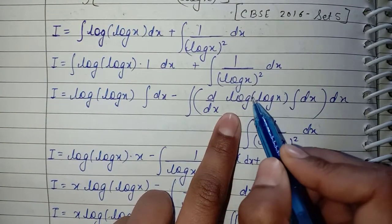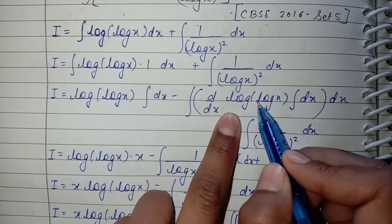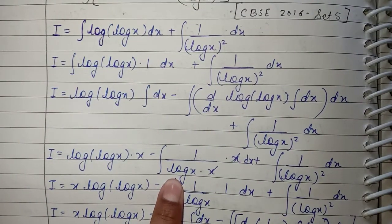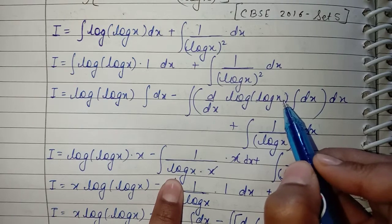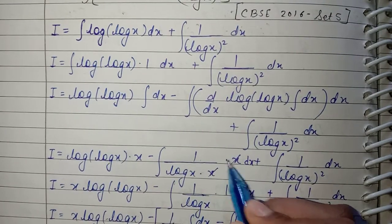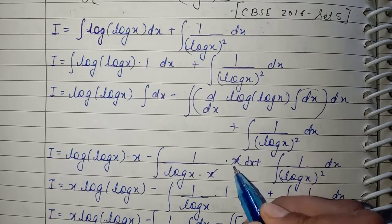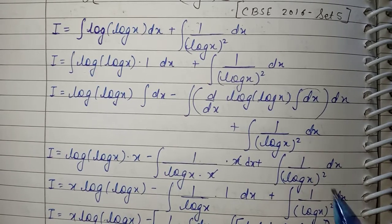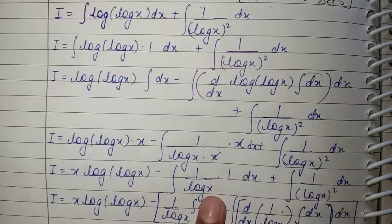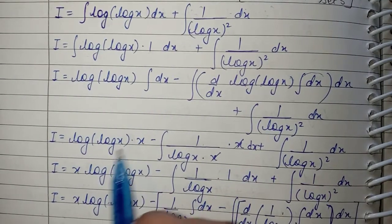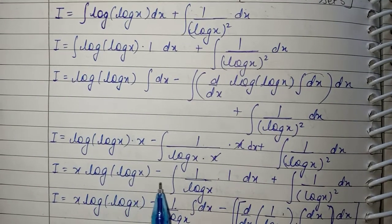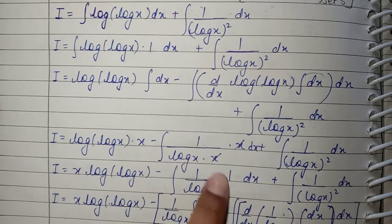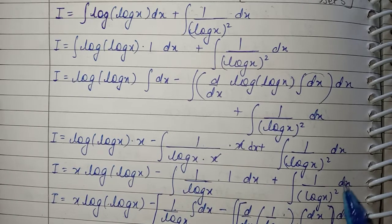The derivative of log(log x) by chain rule is (1/log x)·(1/x). The integration of the second function (1) is x. So the IBP gives x·log(log x) − ∫(1/log x)·(1/x)·x dx, which simplifies to x·log(log x) − ∫1/(log x) dx, plus the second part ∫1/(log x)² dx, which was already given.